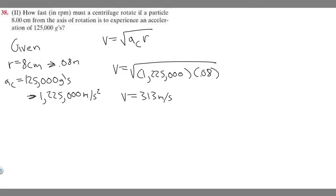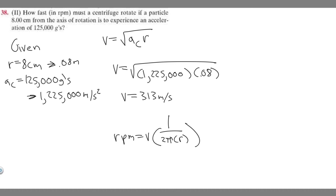What we're trying to do is find rotations per minute. 313 m/s is just the velocity our object is going, and there's a formula to convert this. RPM is equal to velocity times 1 over 2π times the radius. Notice they're asking in minutes, so since the velocity is in seconds, we also multiply by 60 to convert seconds to minutes — there are 60 seconds for every one minute.